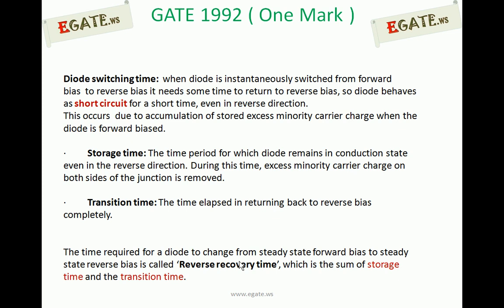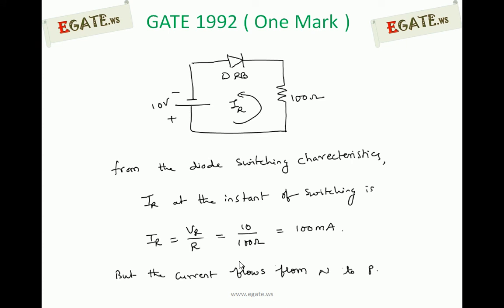Now in the question, we are calculating the current at T equal to 0 only, which is the initial state of changing from forward biased to reverse biased — we are just entering the region of storage time. During storage time, even though the diode is going into the reverse direction, a large current flows because the diode still acts as a short circuit. The current is calculated using the voltage at that instant and the resistance of the circuit.